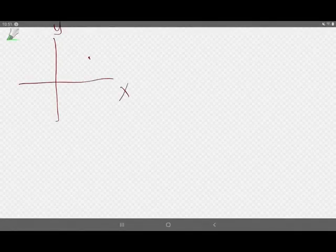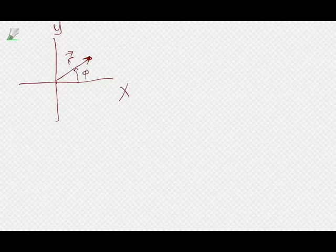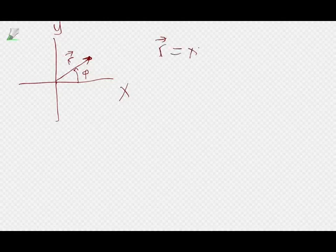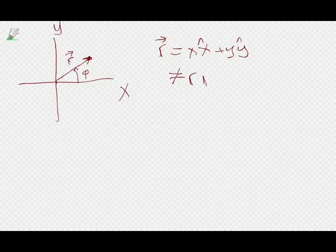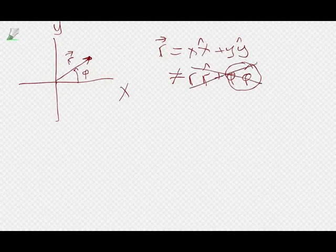Polar coordinates. Just to remind you: if I have x and y, and there's some particle at some position, that is the r vector. So r is the distance from the origin, and phi is the angle off of the x-axis. You can always write r-vector as x x-hat plus y y-hat, at least in 2D — in 3D you'd need a z term as well.